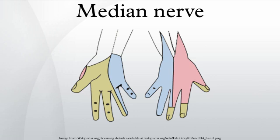Second, digital cutaneous branches — the common palmar digital branch and proper palmar digital branch of the median nerve — supply the lateral three and a half digits on the palmar side, including the index, middle, and ring finger on the dorsum of the hand. Third, the median nerve supplies motor innervation to the first and second lumbricals of the hand.